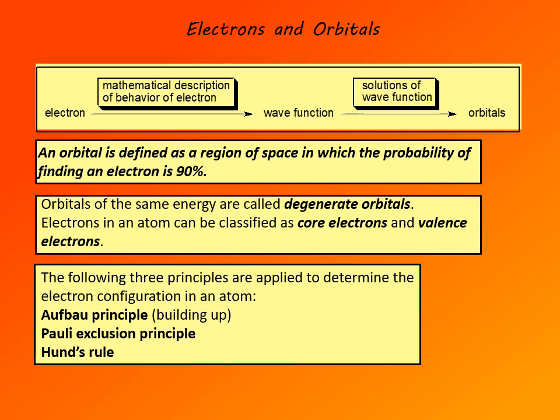When it comes to electronic configuration of an atom, there are three principles that are applied to determine electron configuration of an atom. First is Aufbau principle, that's German for building up, that electrons fill orbitals from lowest energy up higher in the order of increasing energies. Then Pauli exclusion principle, that only two electrons with opposite spin can fit in a single orbital.